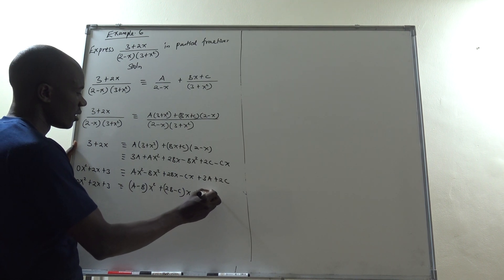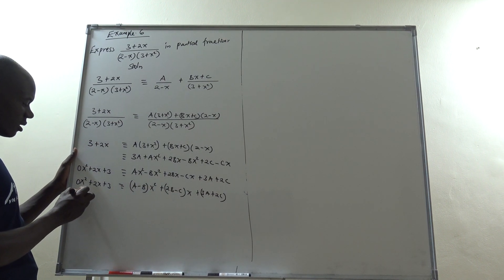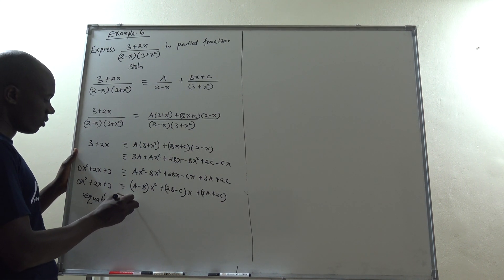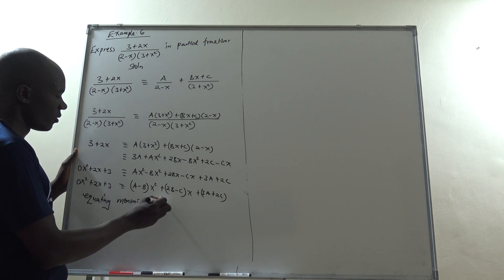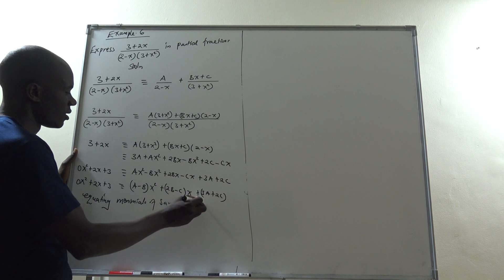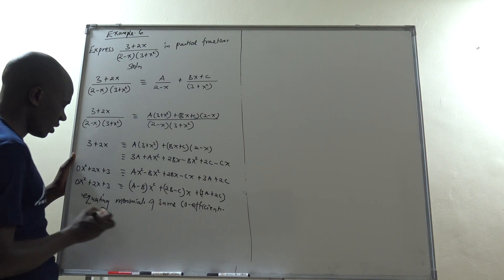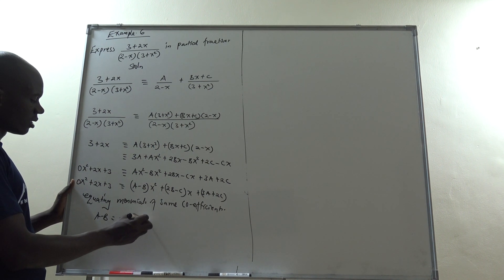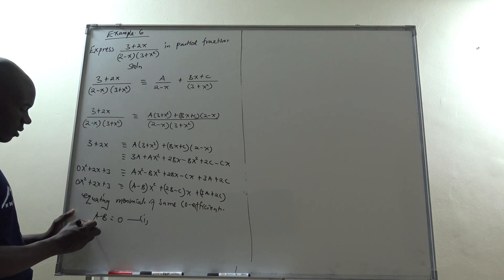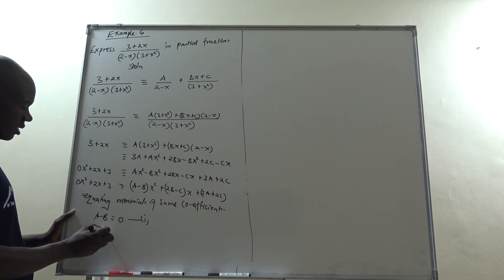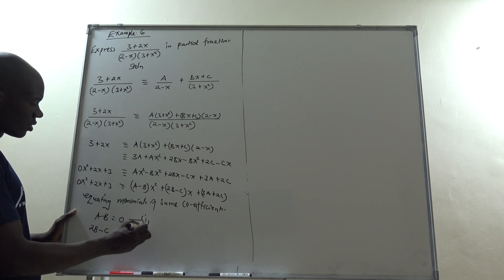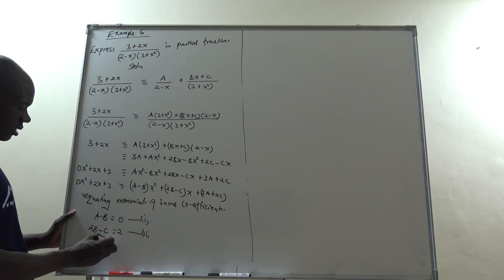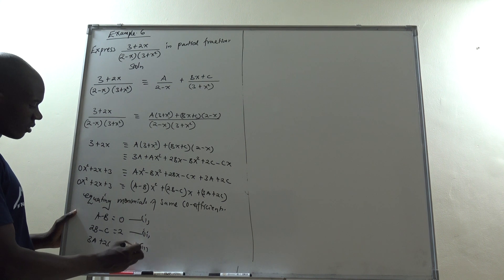Equating monomials of the same coefficients gives three equations: equation (1): A − B = 0; equation (2): 2B − C = 2; equation (3): 3A + 2C = 3.